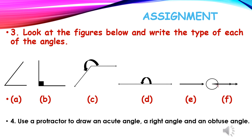Now, today's assignment. Students, from Practice Set 2 we have done problem number one and two. I am giving you the third and fourth as an assignment — you all will try these questions on your own. The answer for both questions will be shared in the next lecture. The third one is: look at the figures below and write the type of each of the angles.